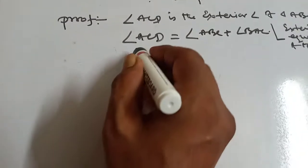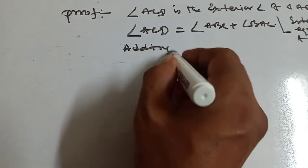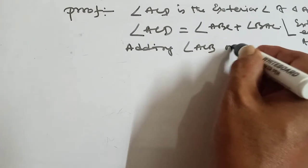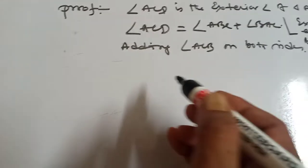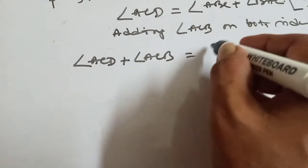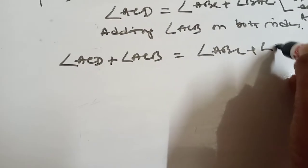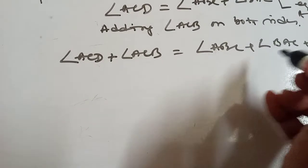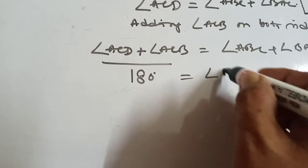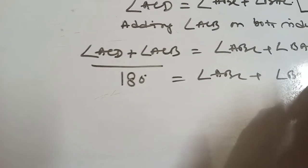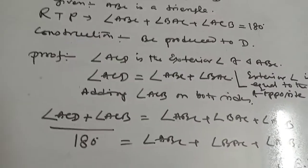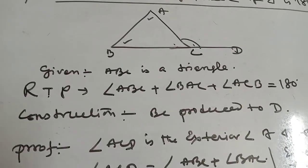Now, adding angle ACB on both sides: ACD plus angle ACB equals angle ABC plus angle BAC plus angle ACB. This equals 180 degrees, since ACD plus ACB is a straight angle. Therefore, angle ABC plus angle BAC plus angle ACB equals 180 degrees. QED — the sum of the three angles of a triangle is 180 degrees.